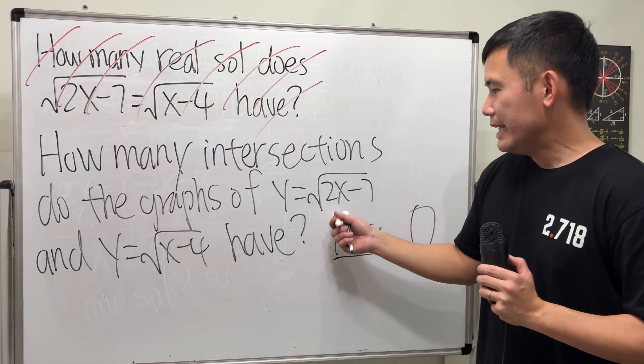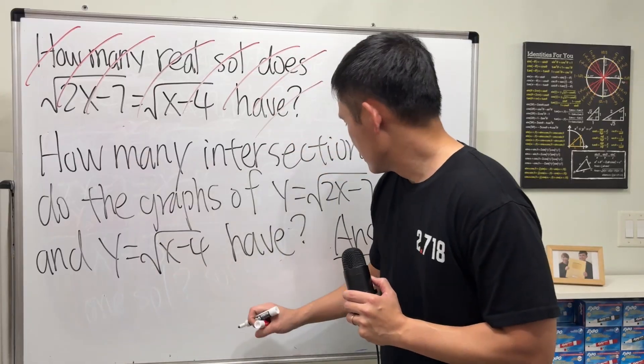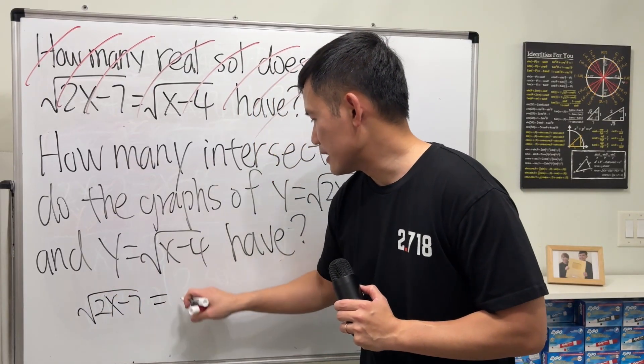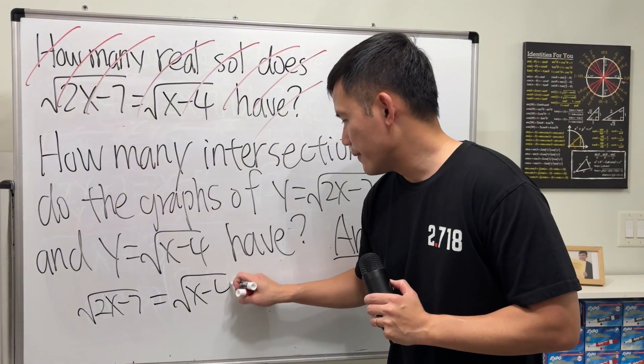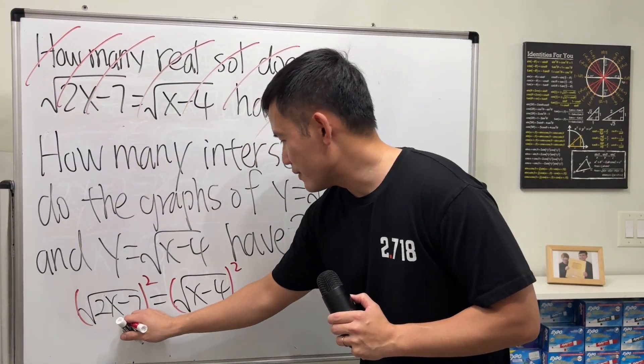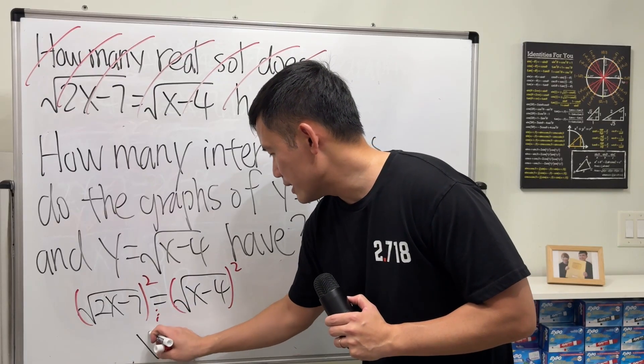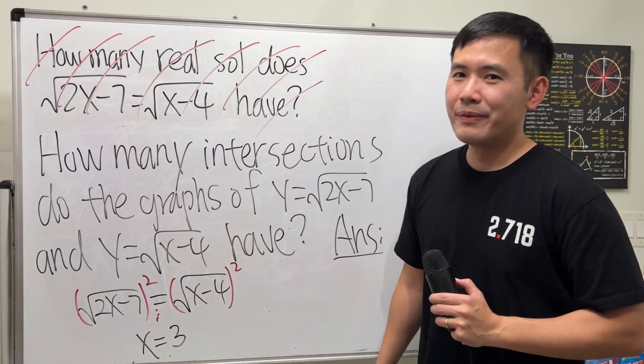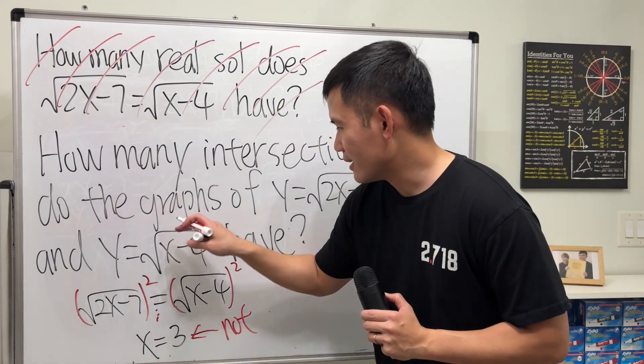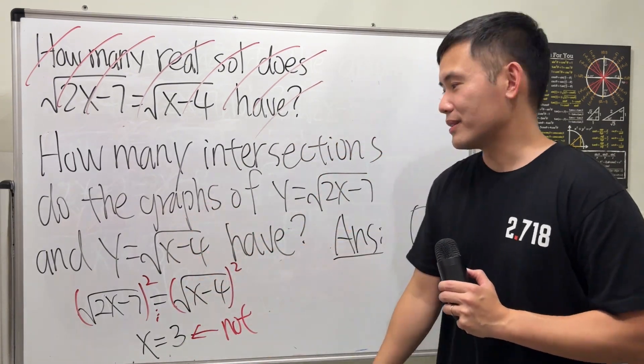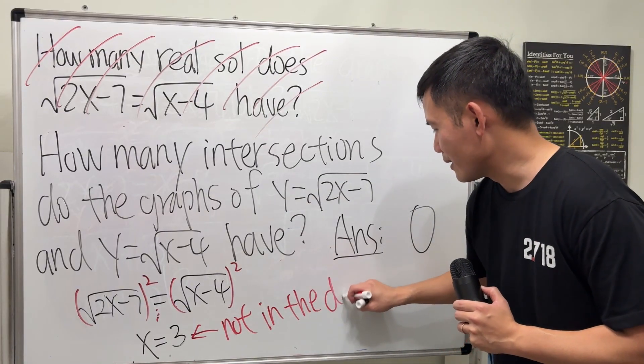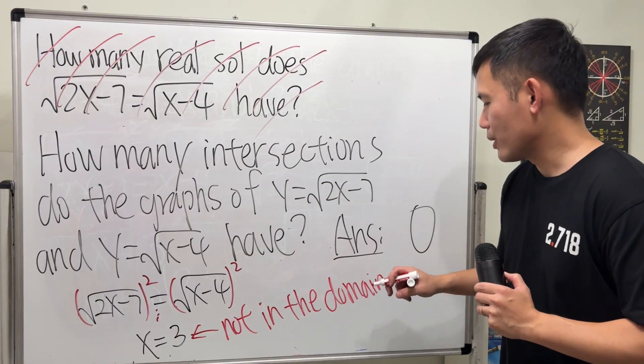However, the trick right here is that if you just set up the equation square root of 2x minus 7 to be the same as this, square both sides, and do all the stuff like we did earlier, and you end up with x equals 3. But I will tell you 3 is not in the domain of the first and also in the second function. So not in the domain. And we're talking about the real domain.